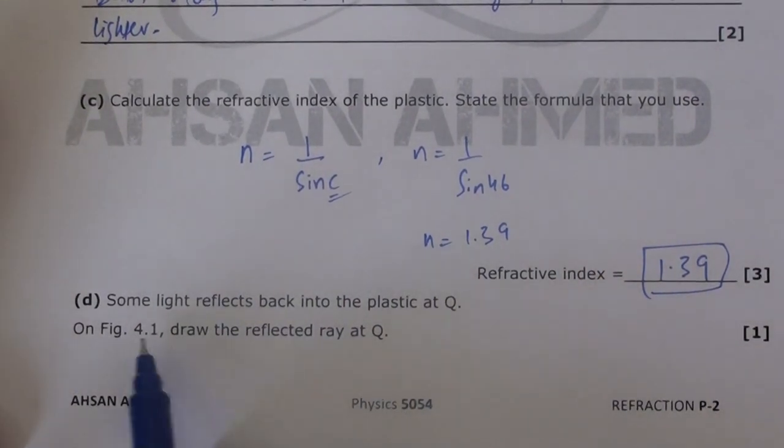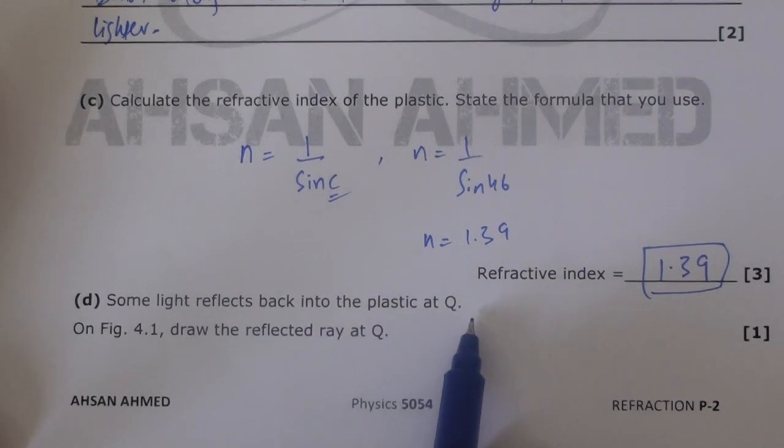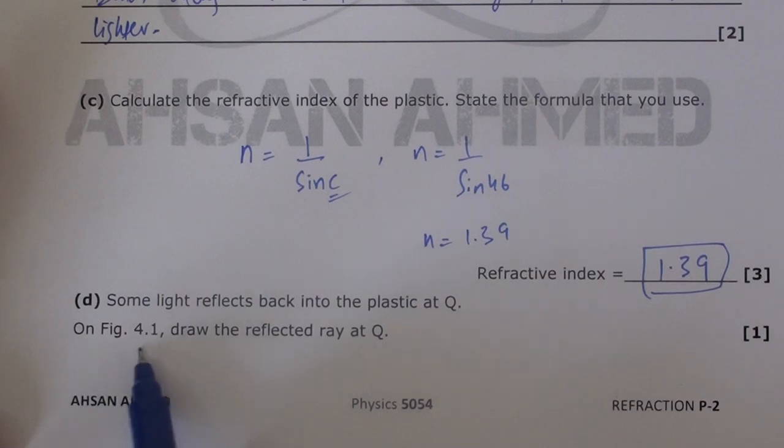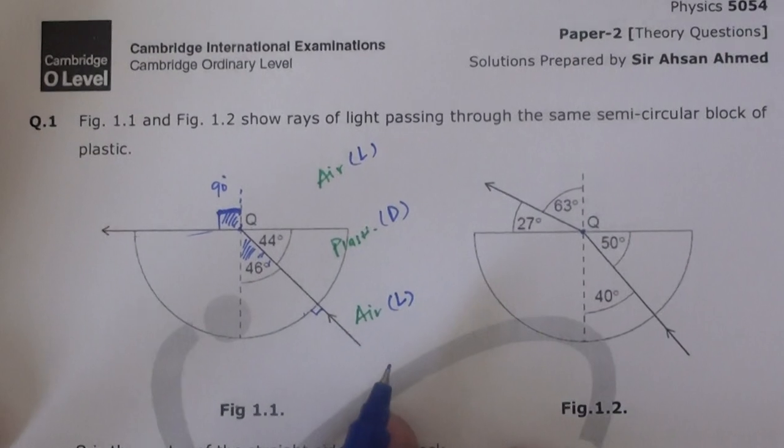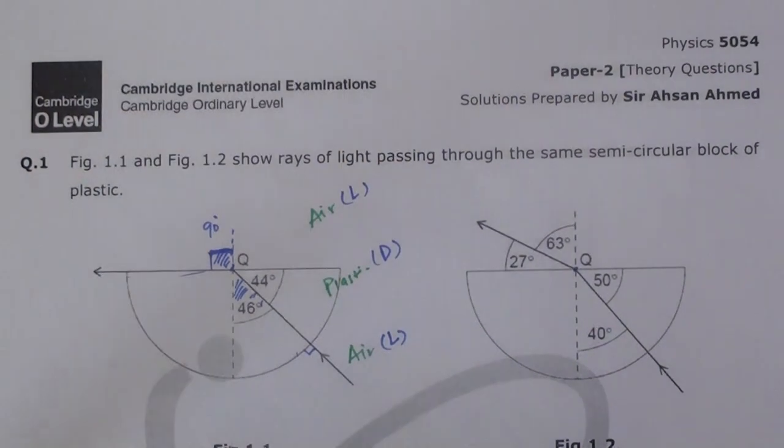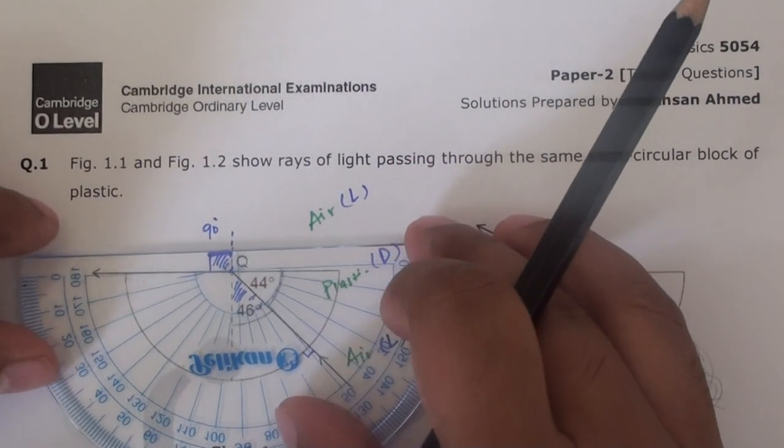Now the next part of the question says some of the light reflects back into the plastic at Q. Yeah, we know that partially it reflects back even when light is refracting. On Figure 4.1, draw the reflected ray at Q. So for this I'm going to take proper tools, and that is the protractor for sure.